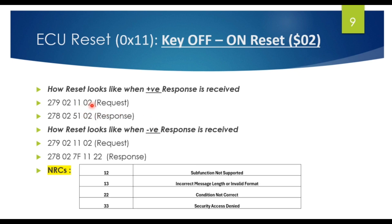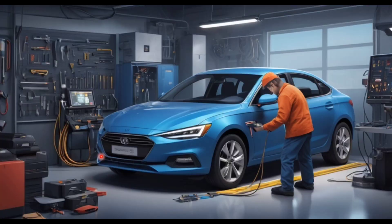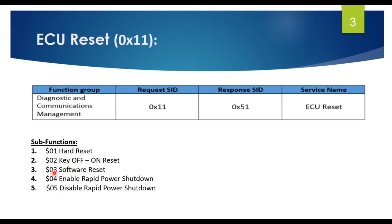The soft reset response looks the same as the previous resets — positive response is 0x51 0x03 and negative response is 0x7F 0x11 0x22. Sub-functions 01, 02, and 03 are the most important ones. Sub-functions 04 and 05 are enable rapid power shutdown and disable rapid power shutdown. Enable rapid power shutdown is like putting your laptop into sleep mode — the ECU remains powered by the battery but not by the ignition, ready to wake up quickly when needed.